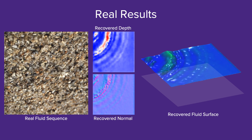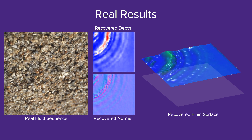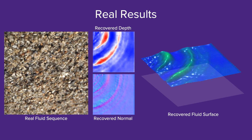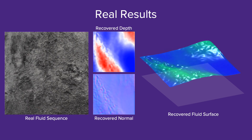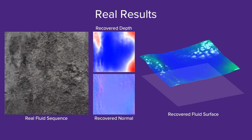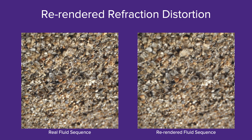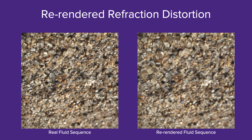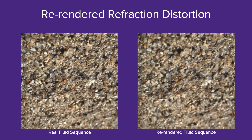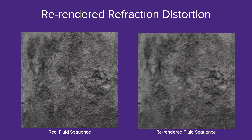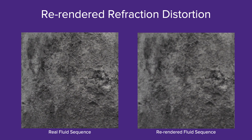Here we show our reconstruction results on real data. This is a ripple wave with damping effects. This is a wave that is randomly disturbed. To validate our reconstruction, we compare the re-rendered refraction images with the real captured ones. We can see that the distortions are highly consistent.